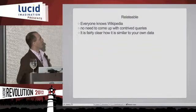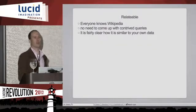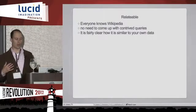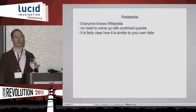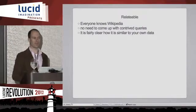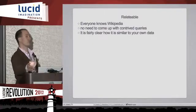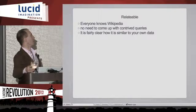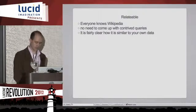Everyone knows Wikipedia, so you don't have to come up with contrived queries. The canonical database example is figuring out what Fred in accounting makes or how many people in accounting make more than Fred — I'm not interested in that. I am interested in Wikipedia, though, so it works really, really well for that. And it's clear how it relates to your own data.